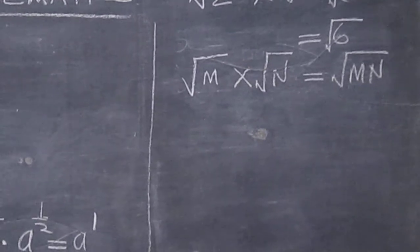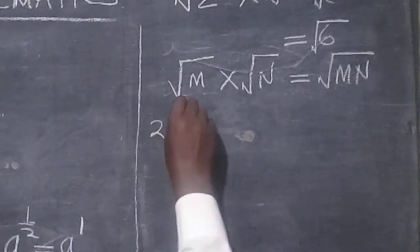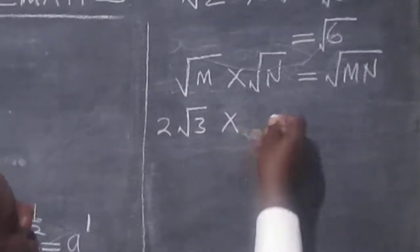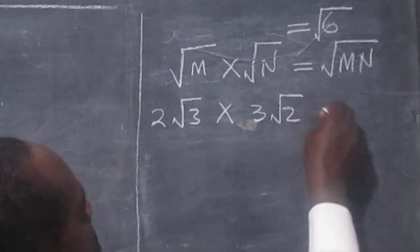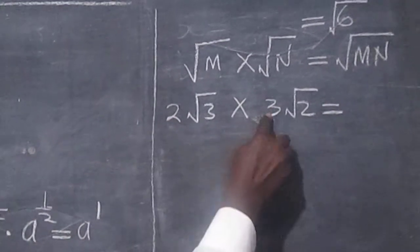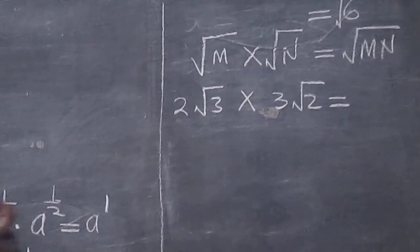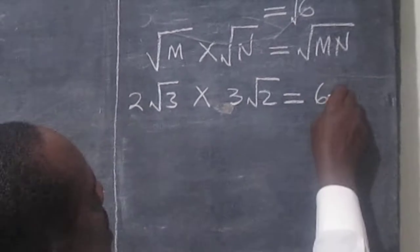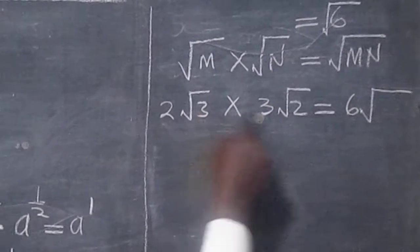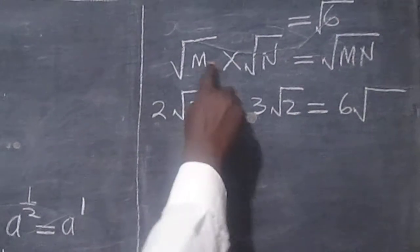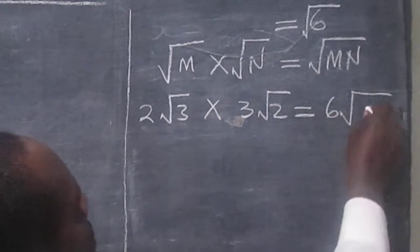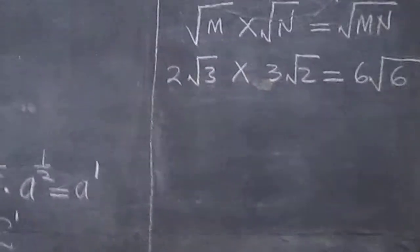We can apply that when we are multiplying different sides. One more example: two root three times three root two will give us — first we multiply two by three to get six, and then what is under the square root sign will multiply according to this law — and therefore we will get six root six.